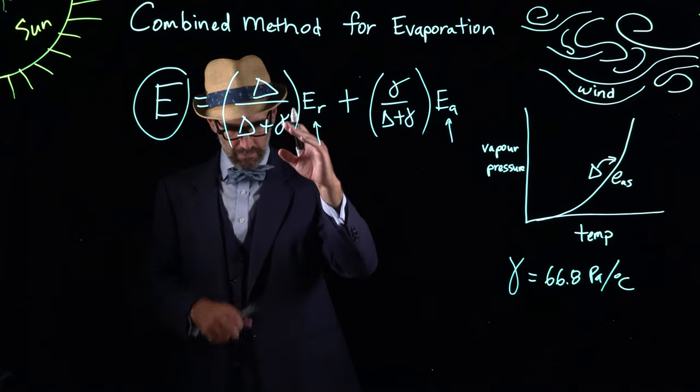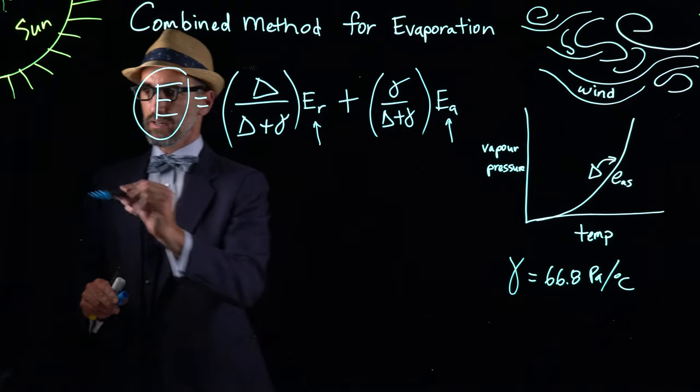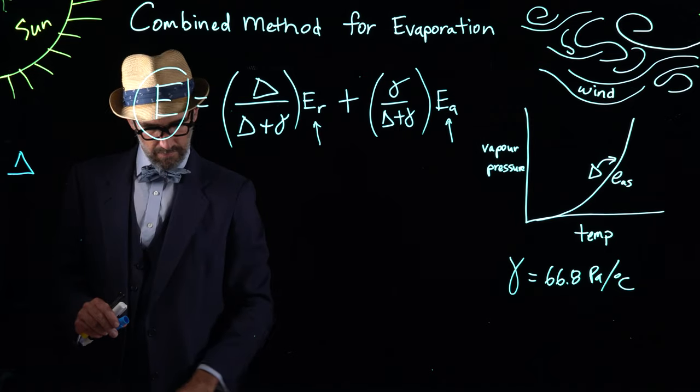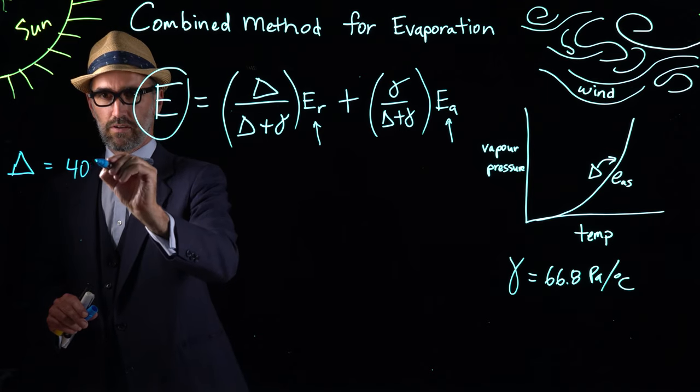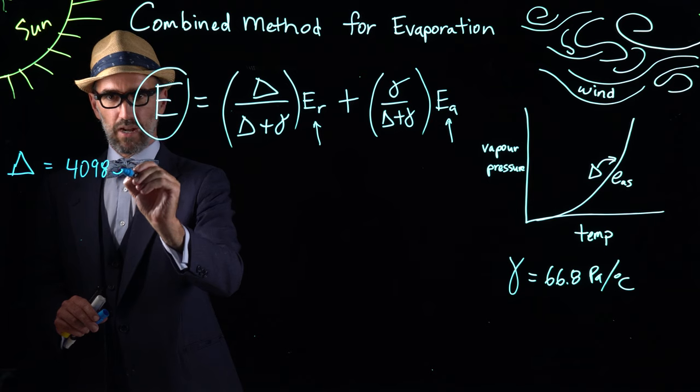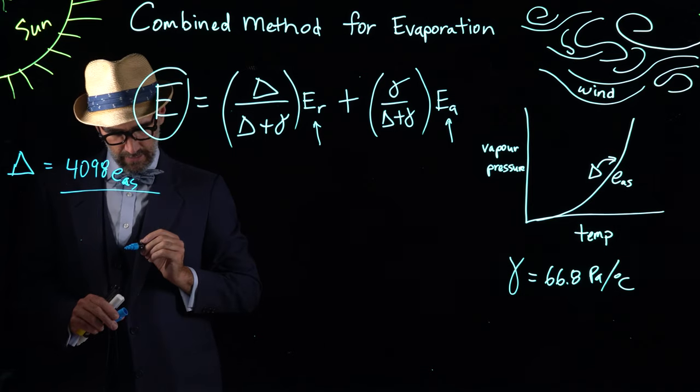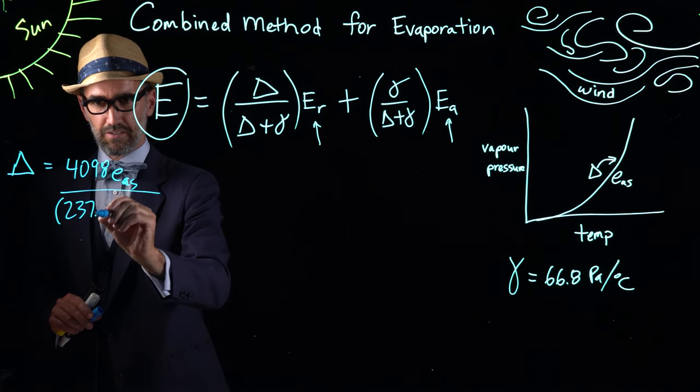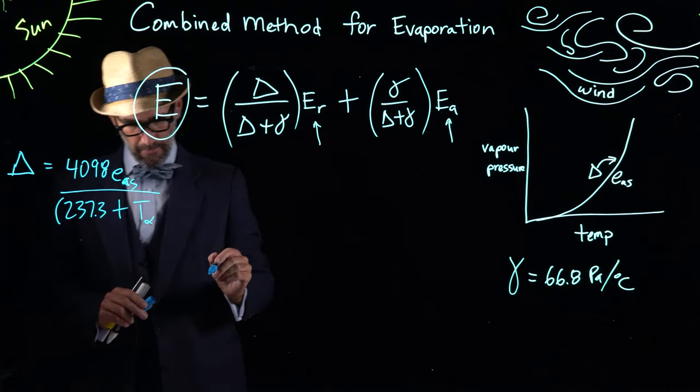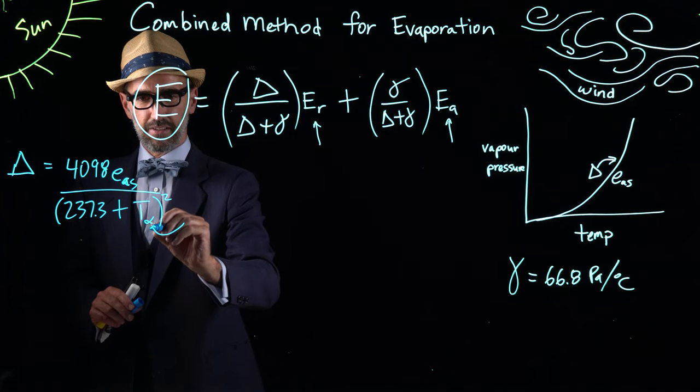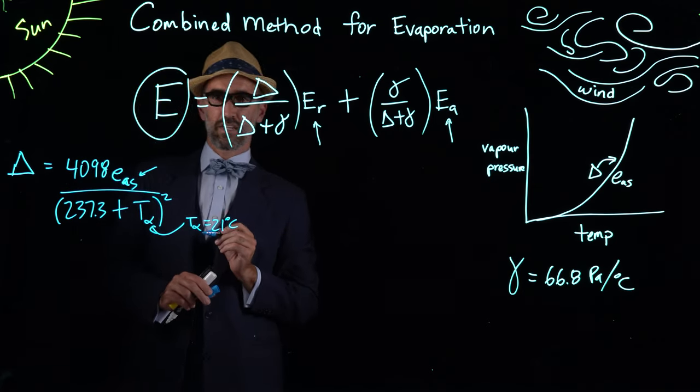First we can calculate delta. Delta is equal to 4098 multiplied by E sub as, divided by this kind of funny number 237.3 plus T alpha all squared, where T alpha is our temperature of 21 degrees C that we have from our previous calculation.